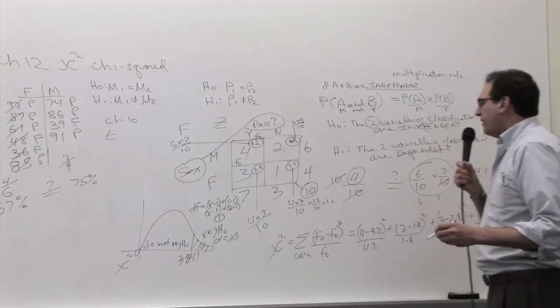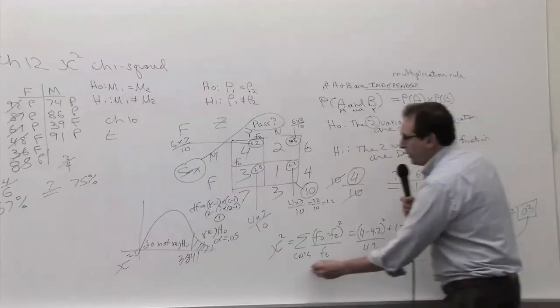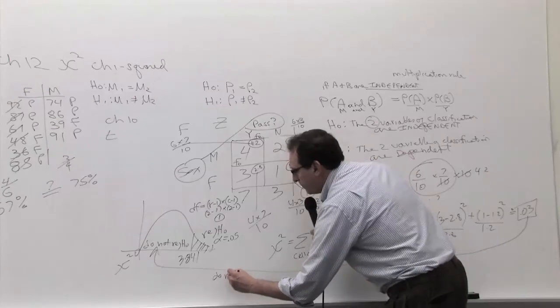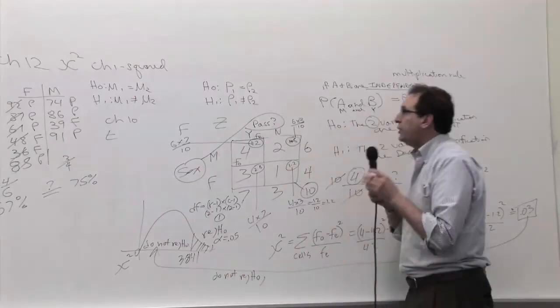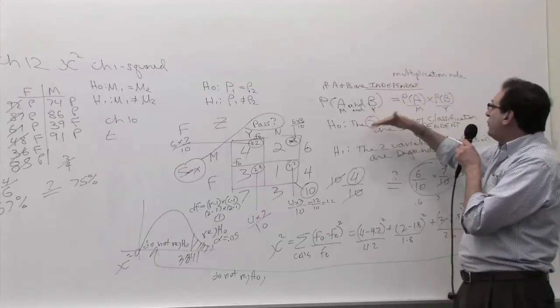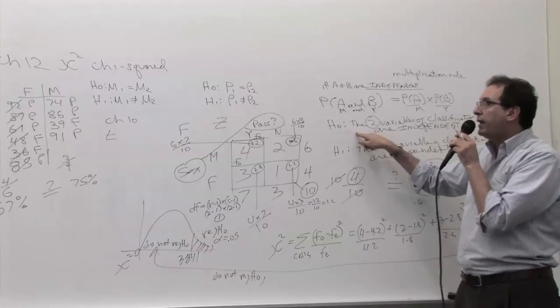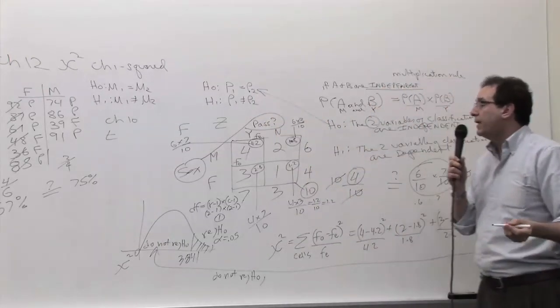And finally, you make your - the fourth step where you make your conclusion. 0.03 is clearly in the 'do not reject' region, so the answer is simply do not reject H0. And in terms of the interpretation, are the two variables related or not? It turns out they're totally unrelated.